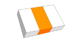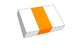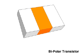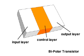There are many kinds of transistors. Typical is the bipolar, which has three layers: an input layer, a control layer, and an output layer.